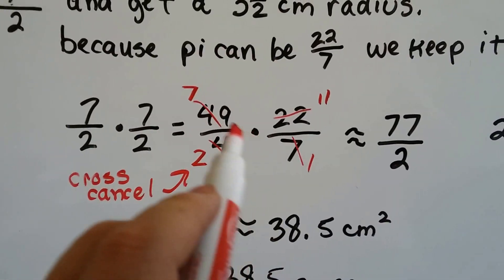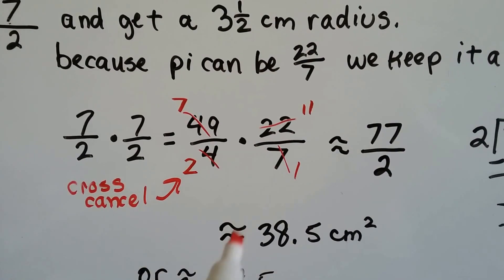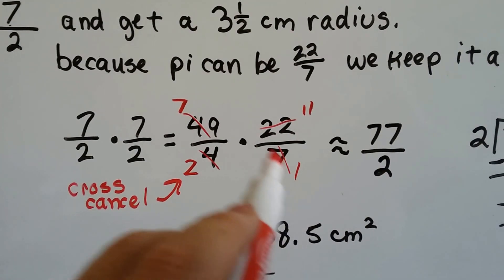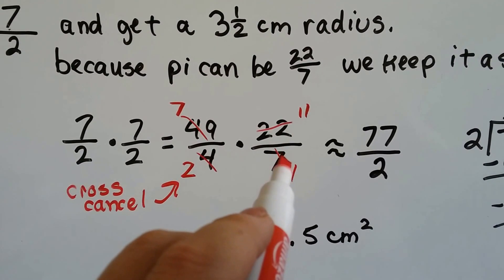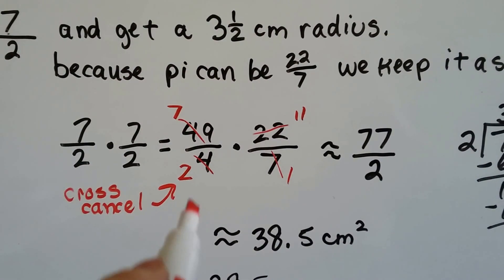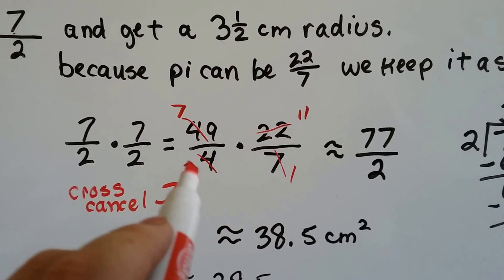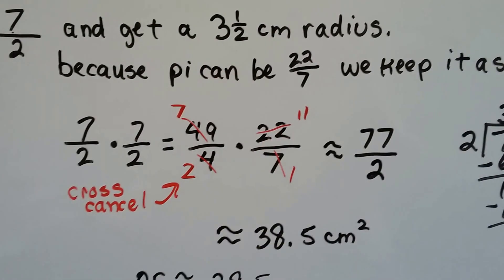Well, we can cross-cancel. When we multiply it to 22 over 7, there's one 7 here and seven 7s in a 49, so that can be cancelled out as a 1, and that can be cancelled out to be a 7.